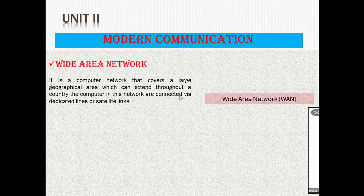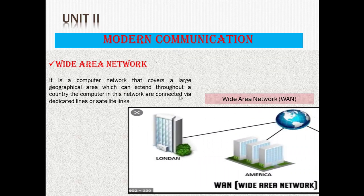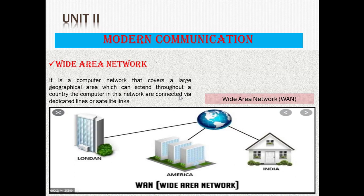Today we are going to cover Wide Area Network. A Wide Area Network is a computer network that covers a large geographical area, which can extend throughout a country. The computers in this network are connected via dedicated lines or satellite links. Here in the image you can see a very big network which can connect from one country to another country.